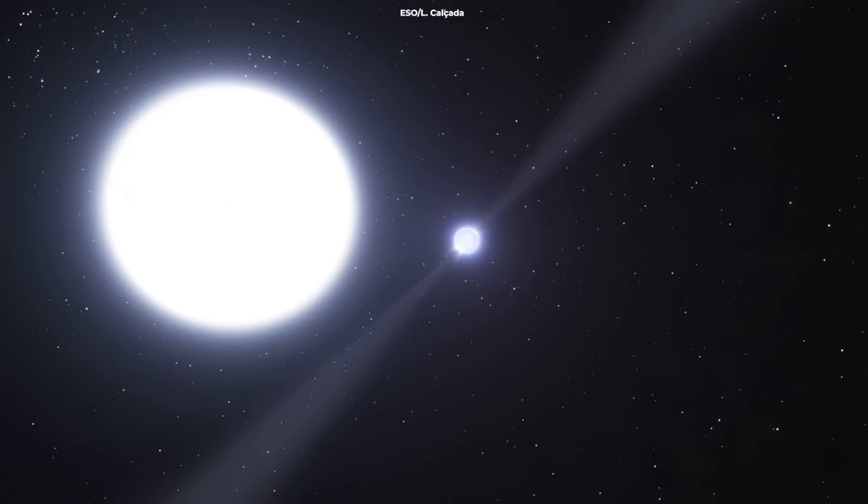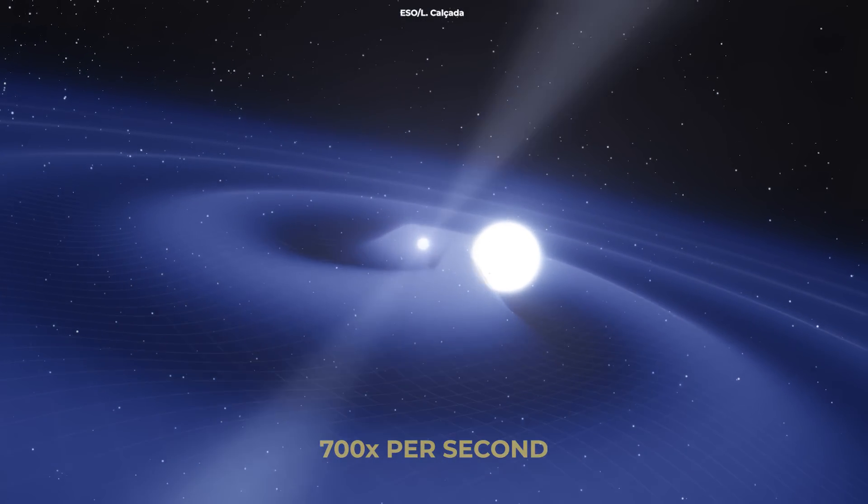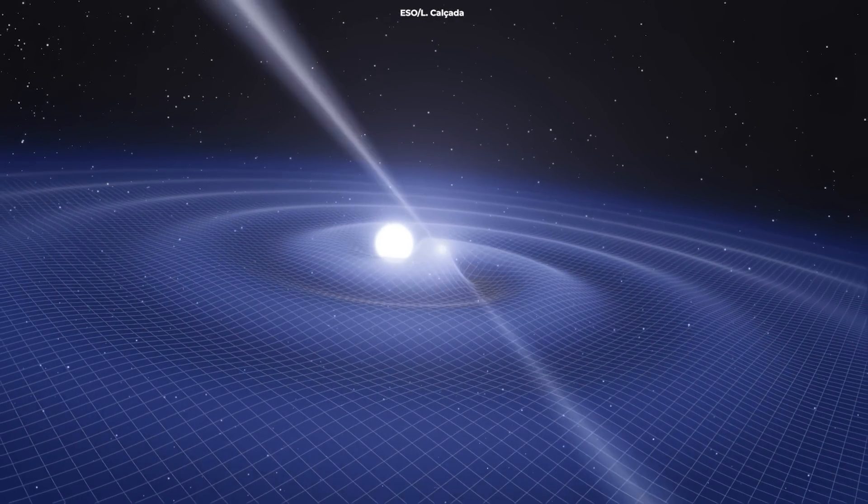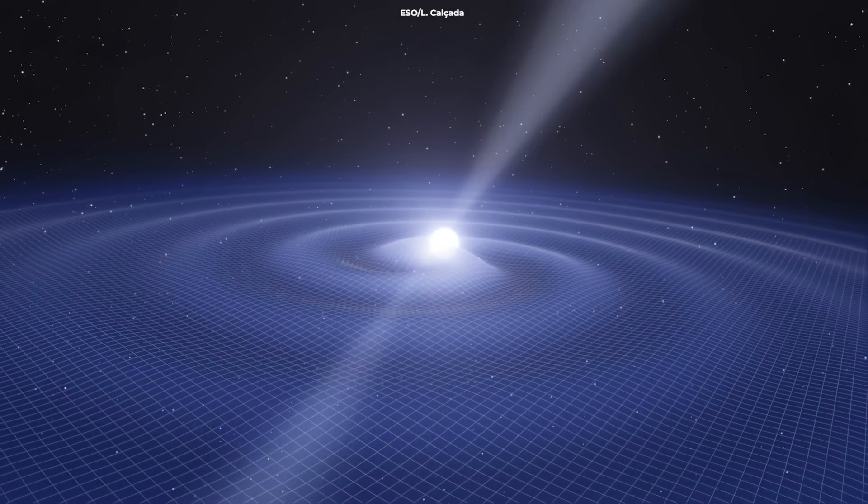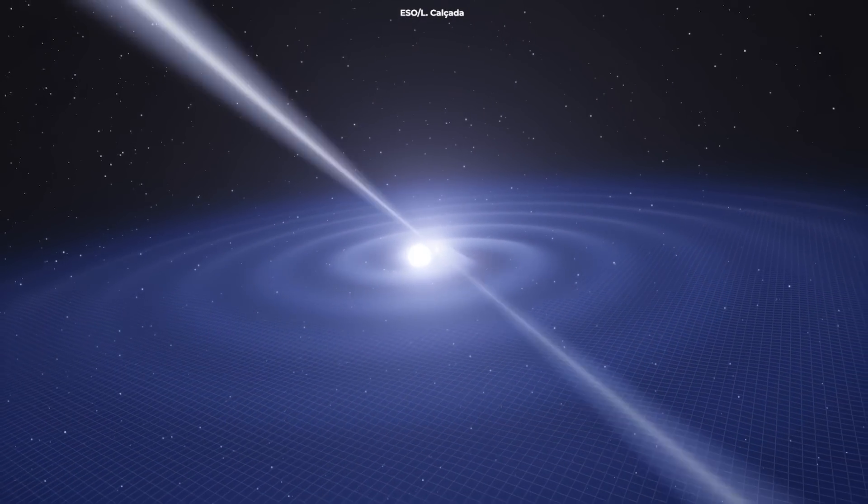Some neutron stars spin so fast, up to 700 times per second, that they start warping space around them. Yeah, we're not talking about shaping themselves. They're literally bending the fabric of space-time. This takes spherical to a whole new level.